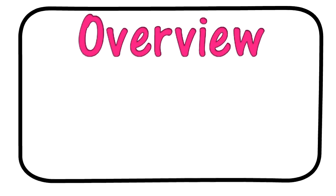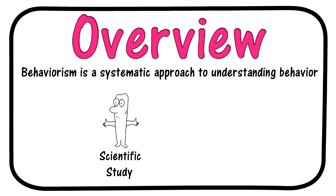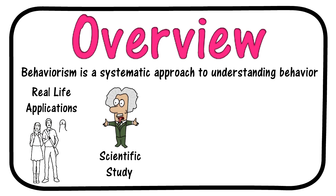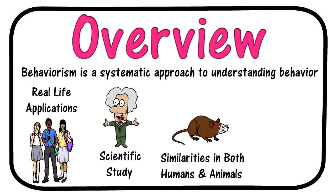Let's begin with a basic overview of behaviorism. Behaviorism is a systematic approach to understanding behavior. At its core, behaviorism is a scientific study. It encompasses a body of techniques for investigating behavioral phenomena. Controlled scientific investigations and data analysis help give behaviorism its purpose. Behaviorism has many real-life applications. Its ideas and theories are deeply studied in the field of education. Parents make practical use of behaviorism theory in raising their children. Many experiments in behaviorism use animals for testing. The belief is that what is learned using animals can be applied to human behavior, as many animals have genetic similarities which make them good test subjects.